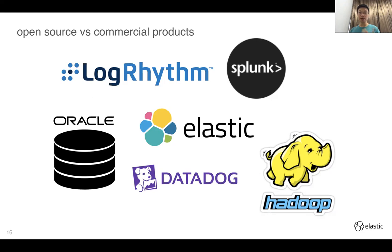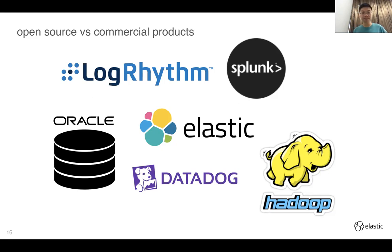Similar things in the field: Splunk is a completely commercial product working similarly to Elastic Stack. Oracle has its own suite for data management. Datadog is very similar to Elastic and is SaaS — software as a service. Hadoop is also a yes-and-no scenario — open source, but you'd likely buy a license for production. These are the variations and options to manage a data management system.